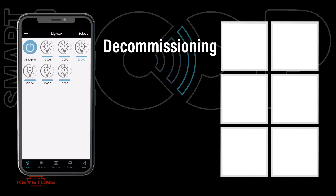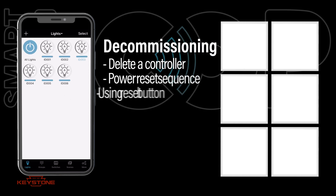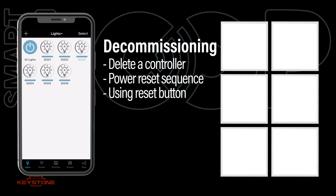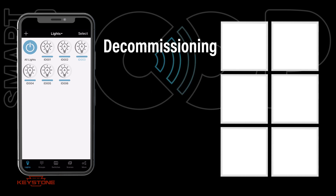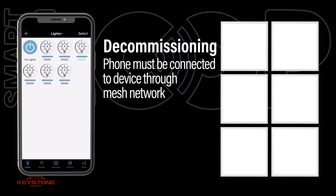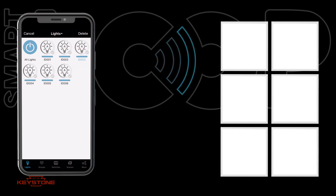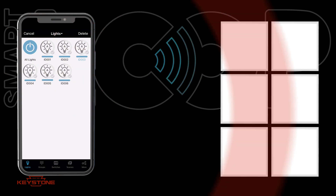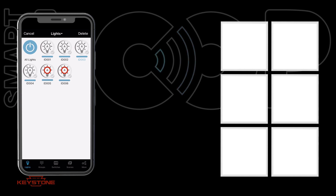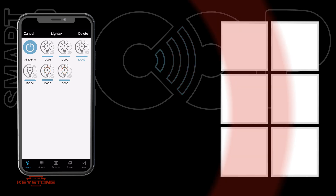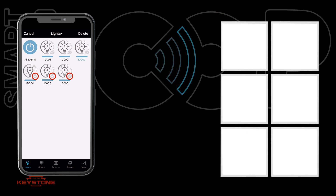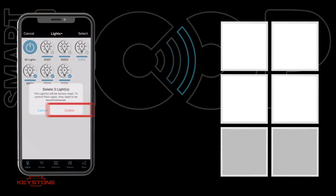Decommissioning can be done by deleting a controller from the region in the app, a power reset sequence, or by using the reset button for certain models. To decommission active lights in the app, the phone must be connected to the device through the mesh network. Then click the Select button. Identify the lights to decommission by pressing the A to turn them on and off. Once identified, select the check mark next to the desired fixtures and press Delete.